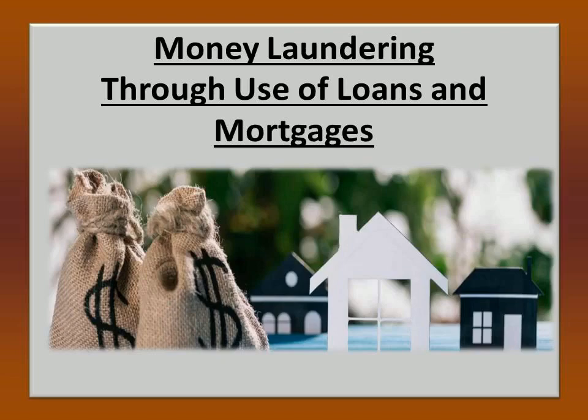Let us understand money laundering through use of loans and mortgages. Criminals use loans or mortgages to layer and integrate illicit funds into high-value assets. Loans or mortgages are essentially taken out as a cover for laundering criminal proceeds. Lump-sum cash repayments or smaller structured cash amounts are used to repay loans or mortgages, allowing illicit funds to be commingled with legitimate funds. Loan-back schemes are an example of this method — criminals borrow their own illicit funds, with foreign offshore companies controlled by criminals used as an apparently arms-length lender. The loan is then used to buy real estate, and repayments are made using illicit funds, hiding the true nature of the funds and giving repayments an appearance of legitimacy.